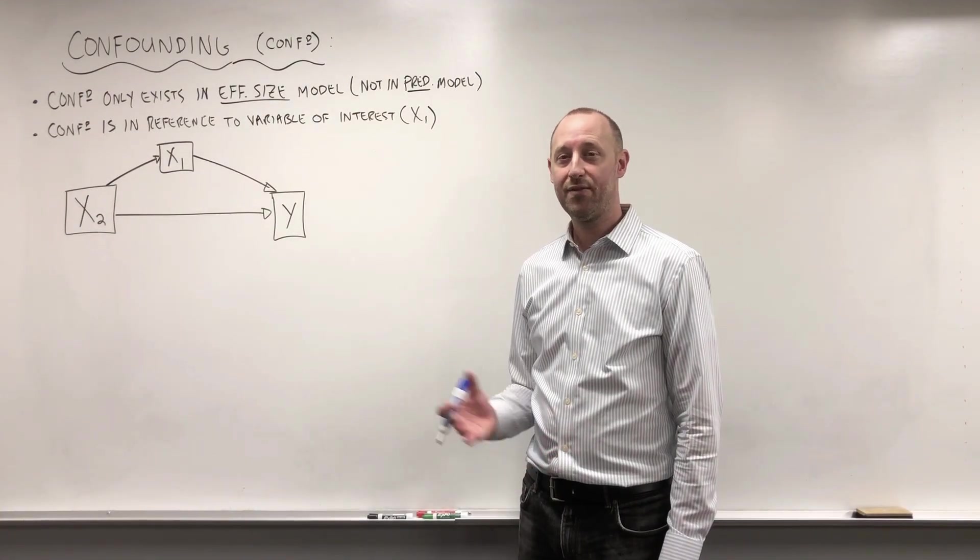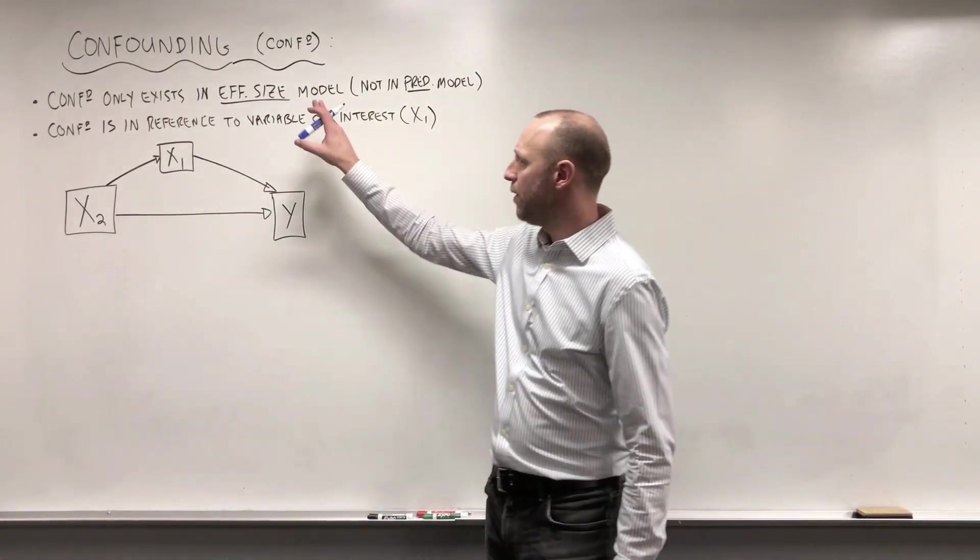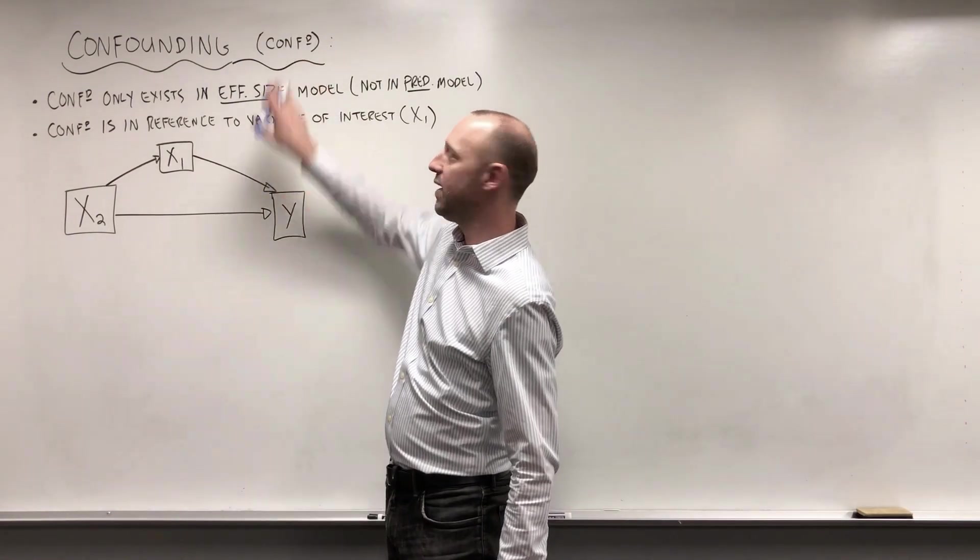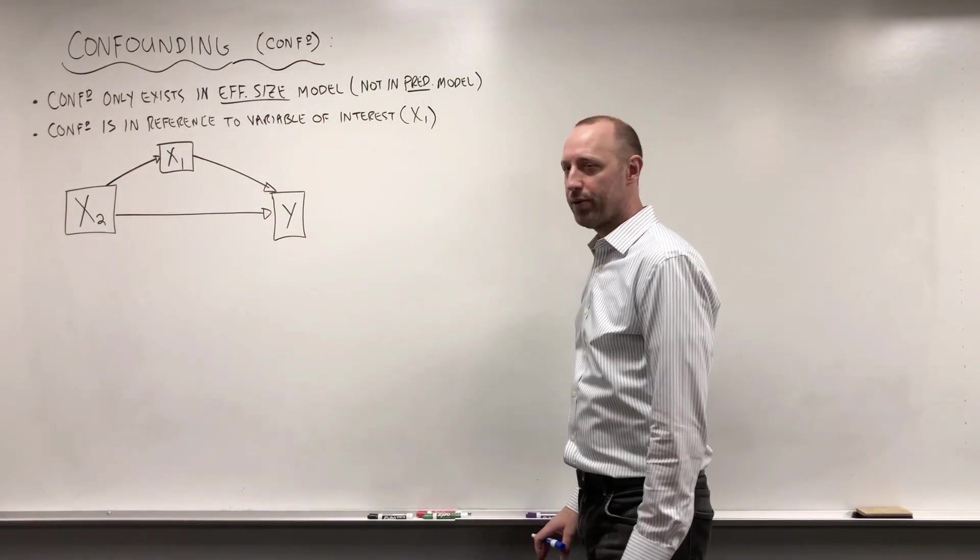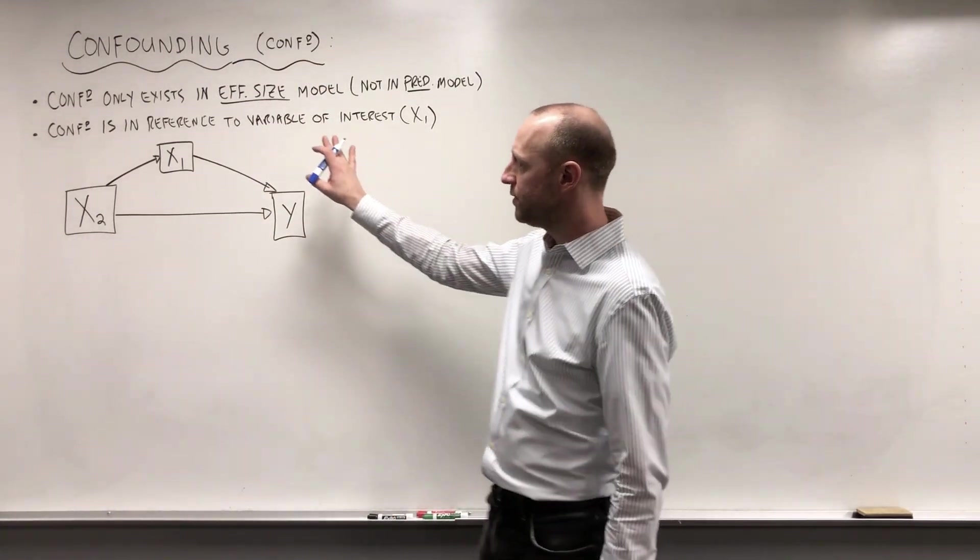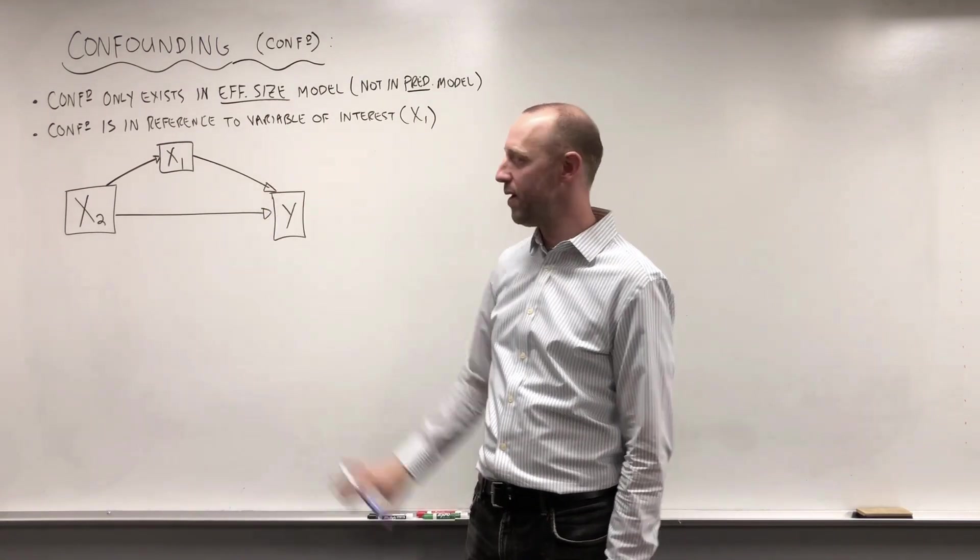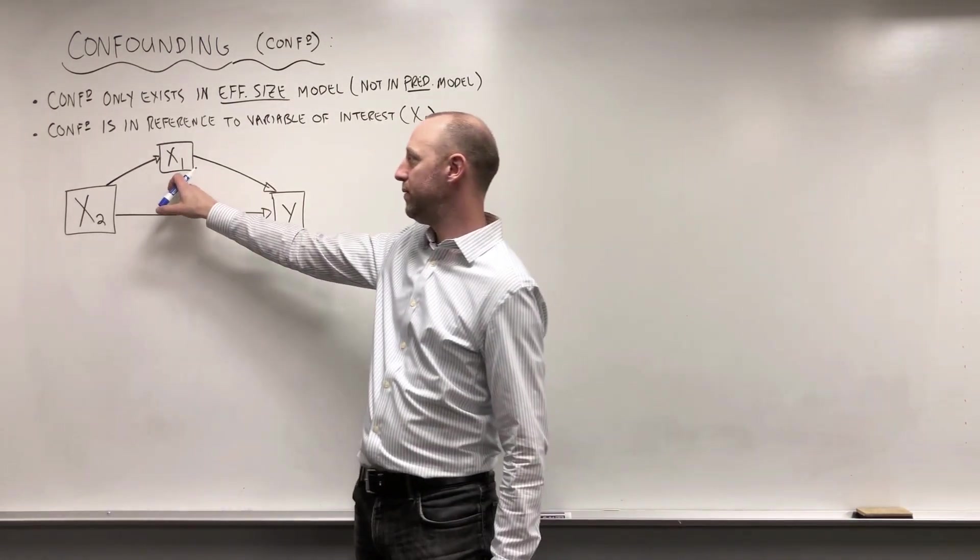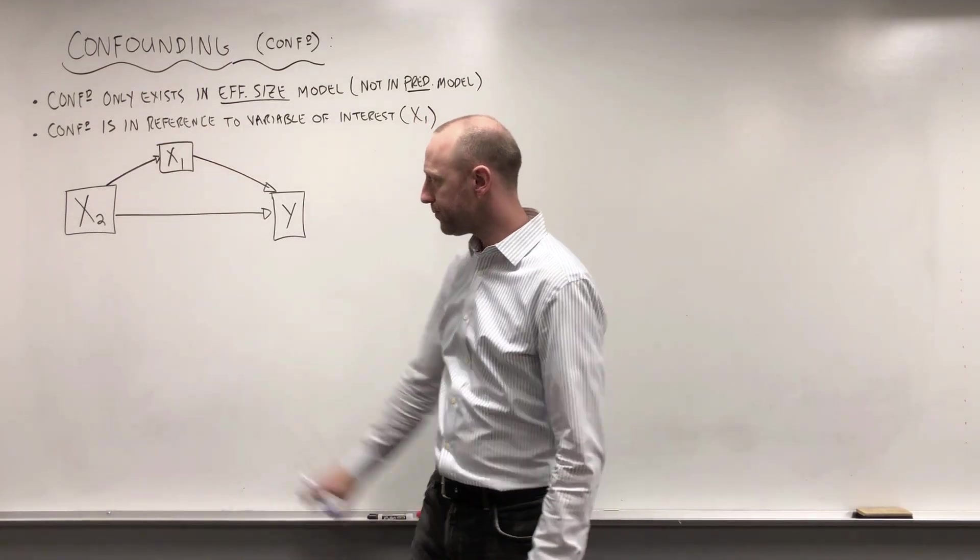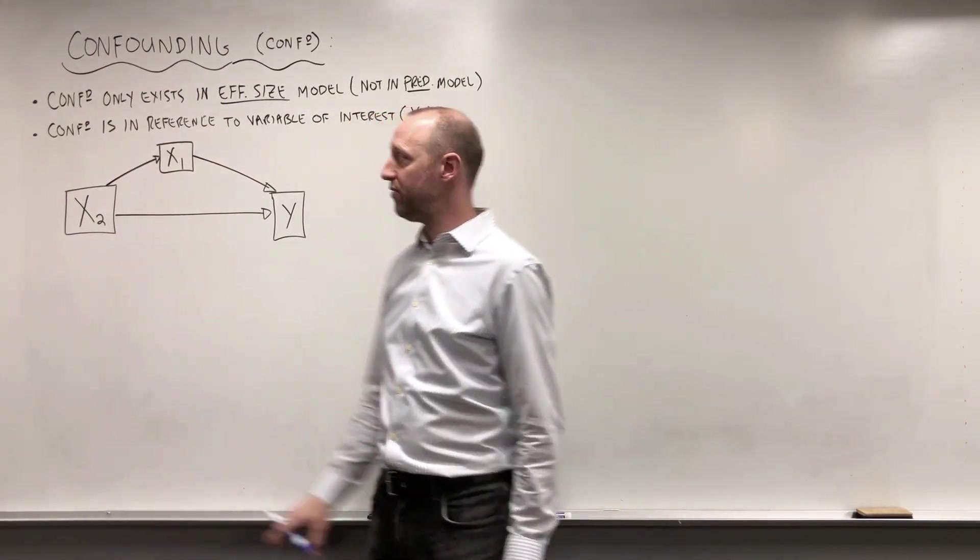Let's talk a little bit more about the idea of confounding. I'm going to abbreviate it often as CONFD, just to make the writing a bit shorter. Now, here's the classic diagram for what a confounder looks like. X1 being our variable of interest, X2 being the confounder.